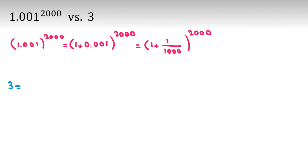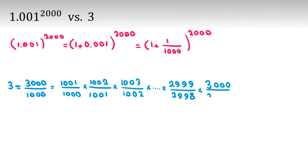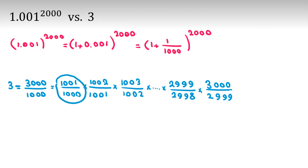For the number 3, we can write it as 3000 over 1000. Using the telescoping product rule, this equals 1001 over 1000 times 1002 over 1001 times 1003 over 1002, continuing up to 2999 over 2998 times 3000 over 2999. Canceling terms, we get 3000 over 1000.